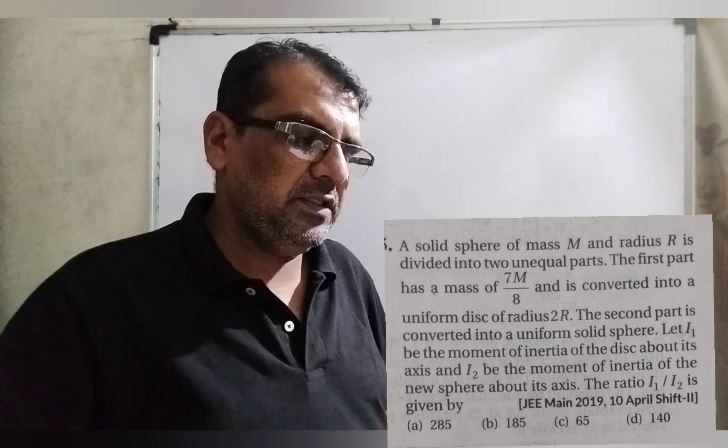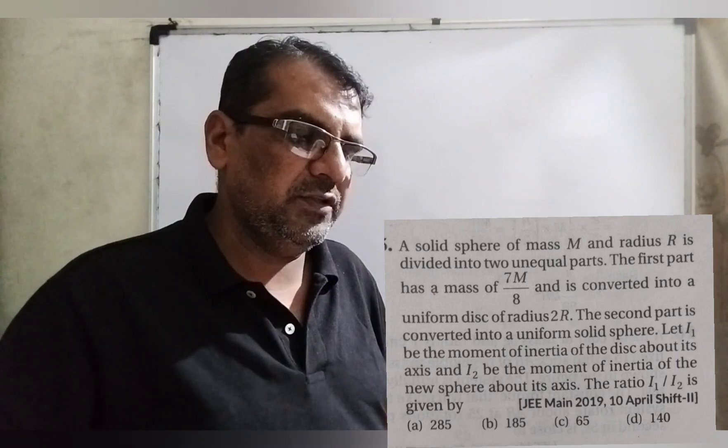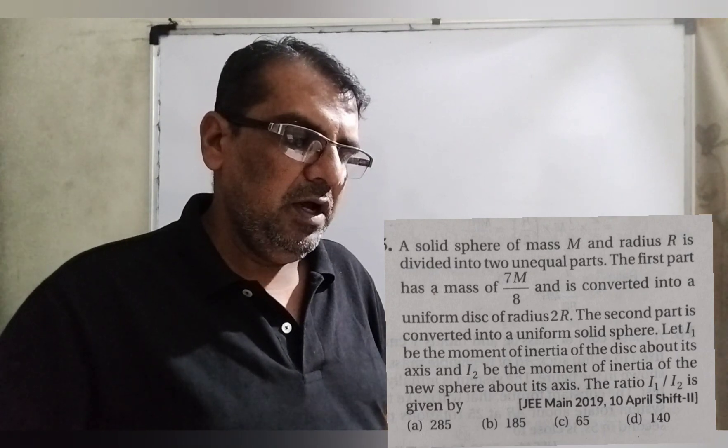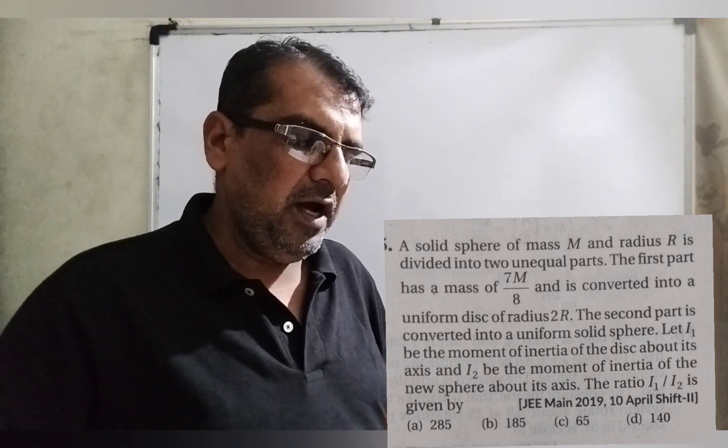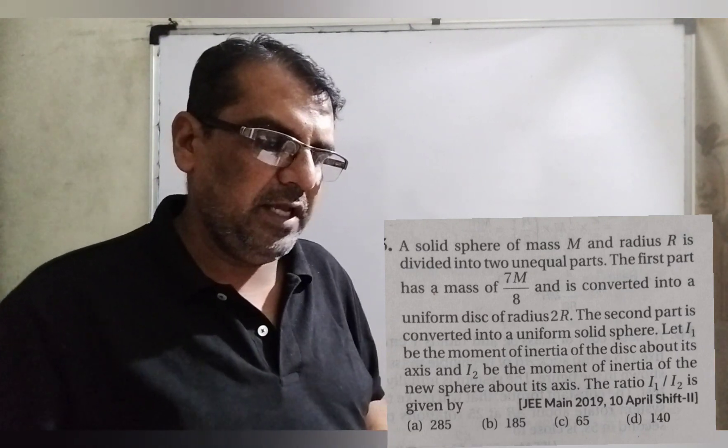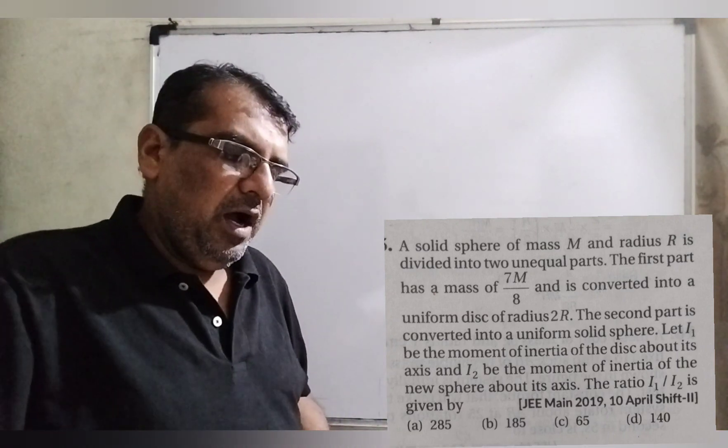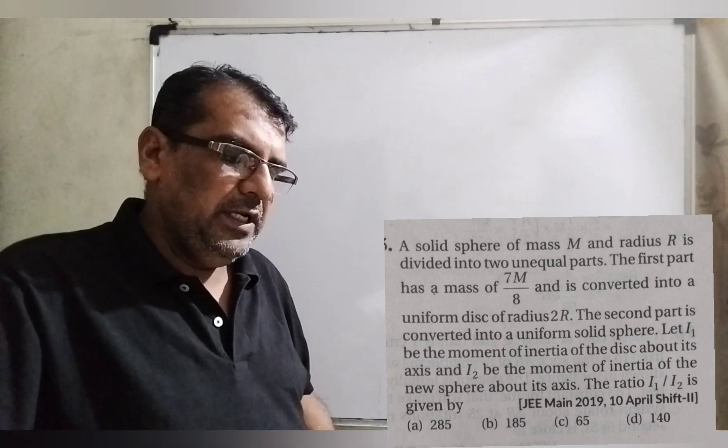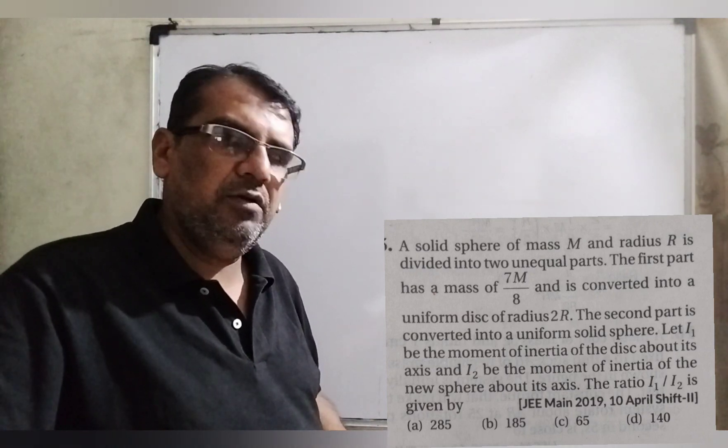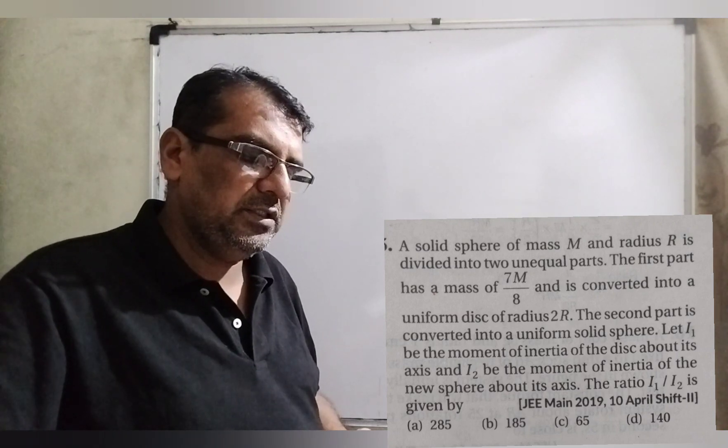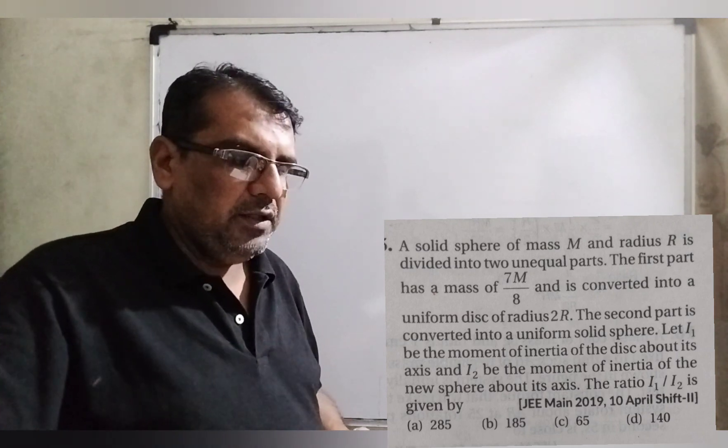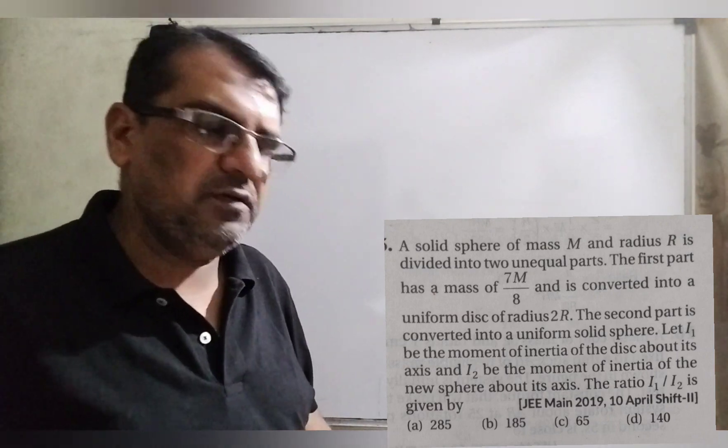The second part is converted into a uniform solid sphere. Let I1 be the moment of inertia of the disk about its axis and I2 be the moment of inertia of the new sphere about its axis. The ratio I1 by I2 is given by: first option 285, second option 185, third option 65, and last D option is 140. This question is from JEE Mains 2019.